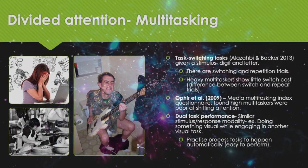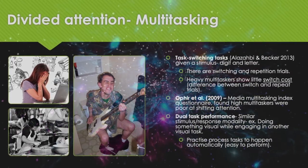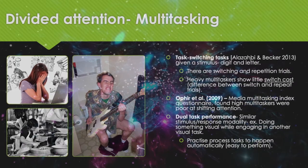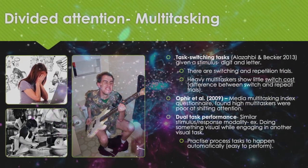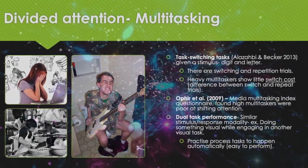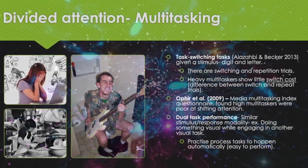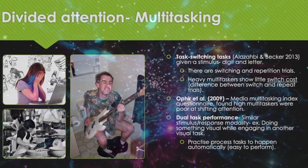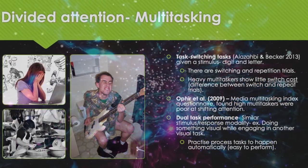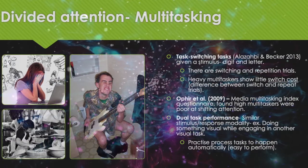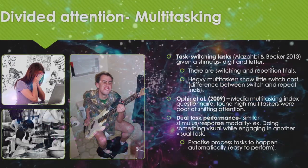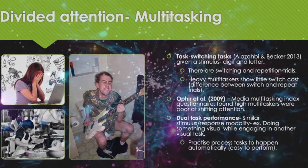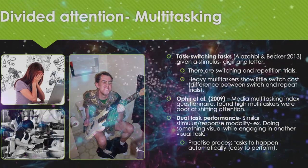Dual task performance involves similar modes of perceiving stimuli and responding. Participants who did something visual while engaging in another visual task found that practiced process tasks would happen automatically — that it was easier to perform. That practice makes perfect, and tasks become automatized.